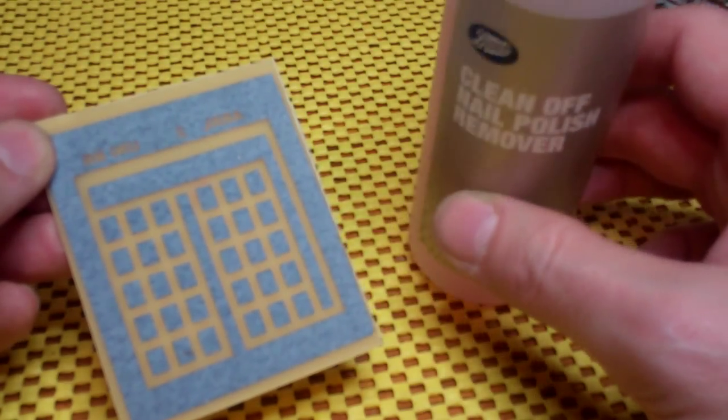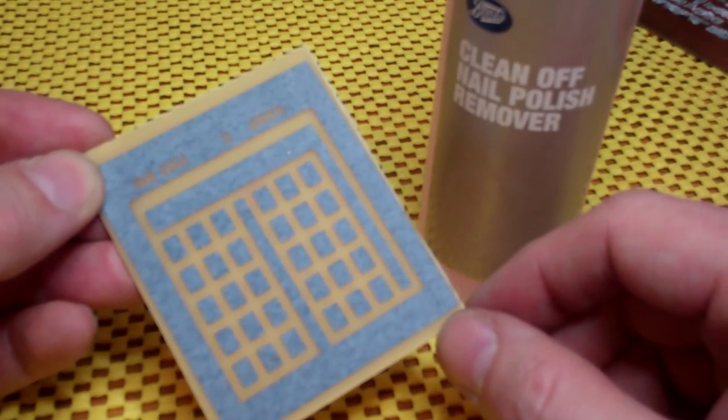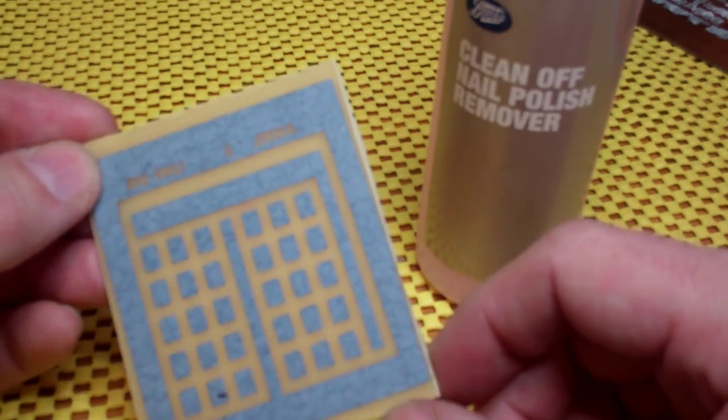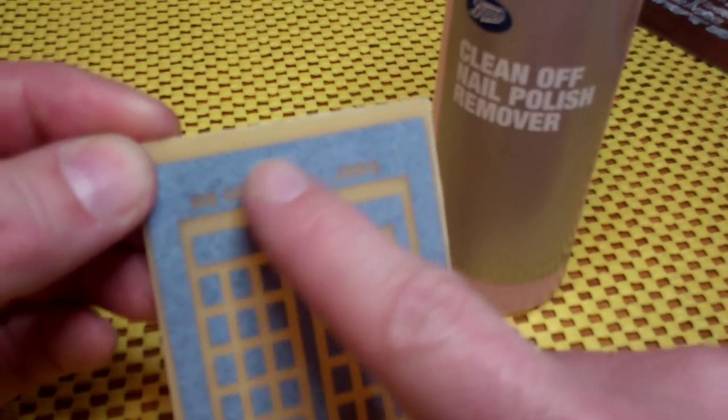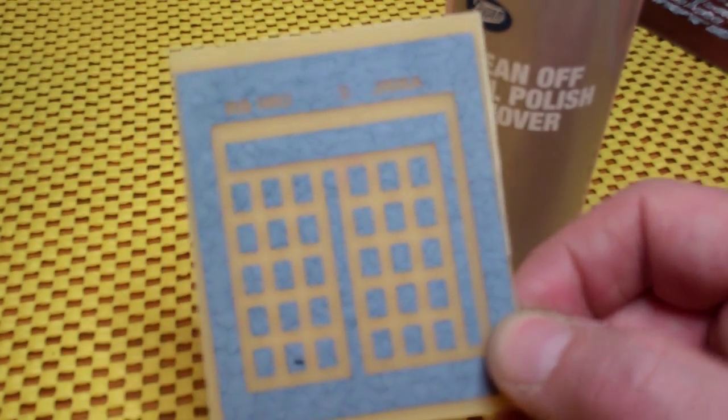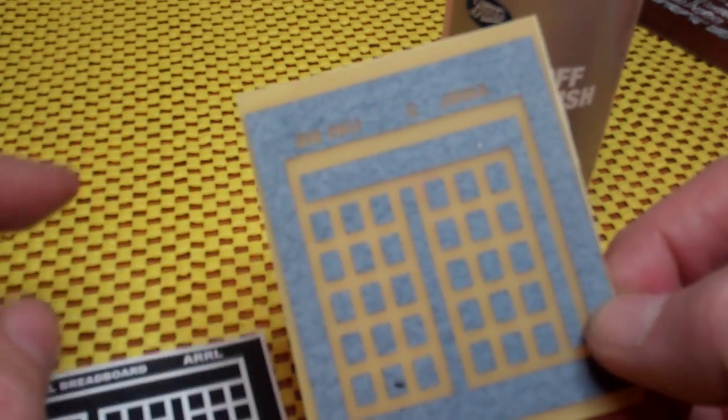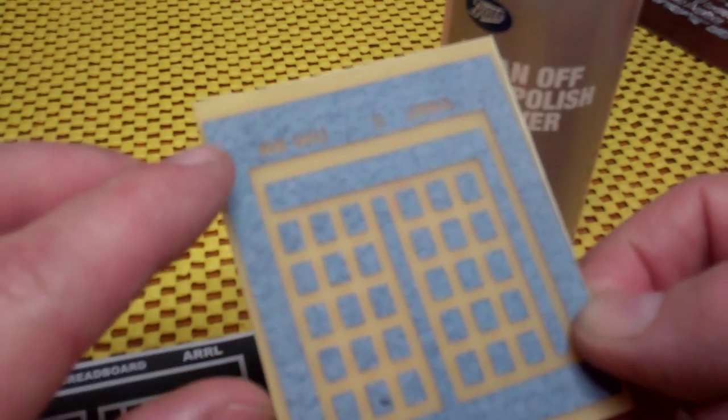It smells nice, but I don't recommend sniffing it. So let's try and wipe this toner off. As you'll see, it doesn't look black anymore. It's gone from this black ink. Of course, the ink is now face down fused to the copper surface.